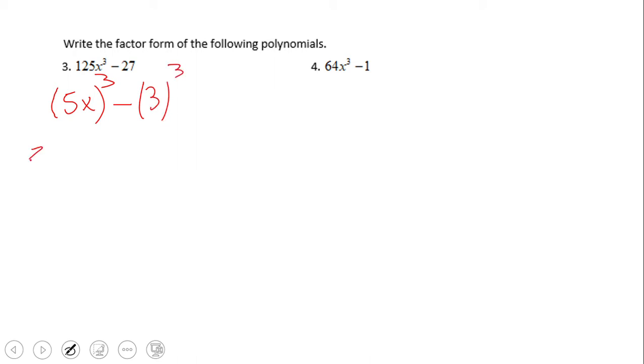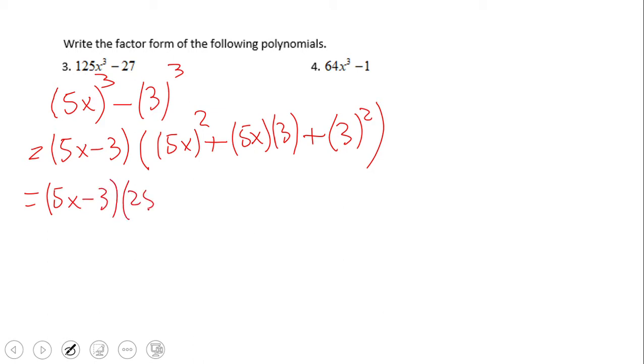So then we have (5x - 3), and then we're going to square the first term, switch the sign, multiply a and b - in this case 5x and 3 - and square the second term. Now we simplify and we have (5x - 3)(25x² + 15x + 9).